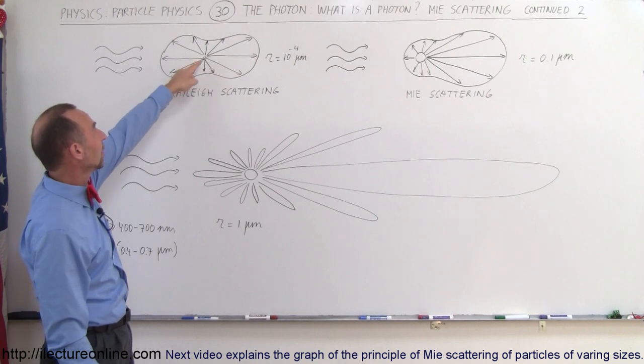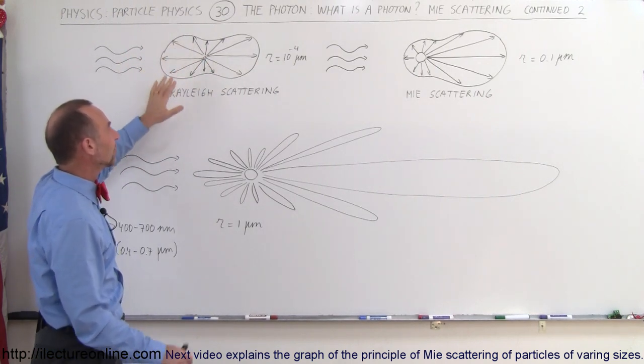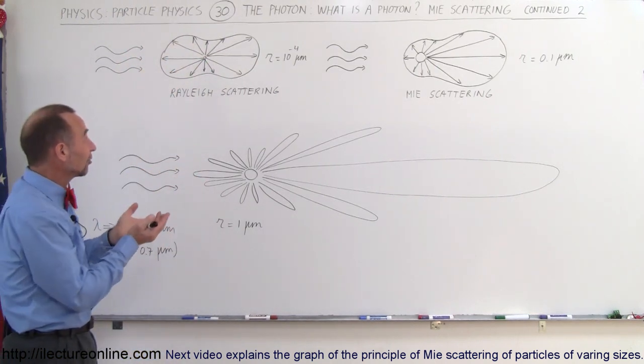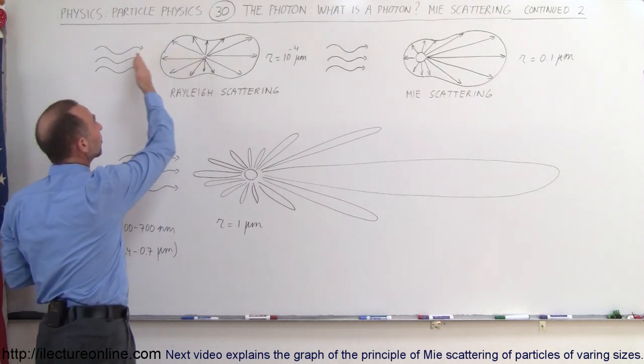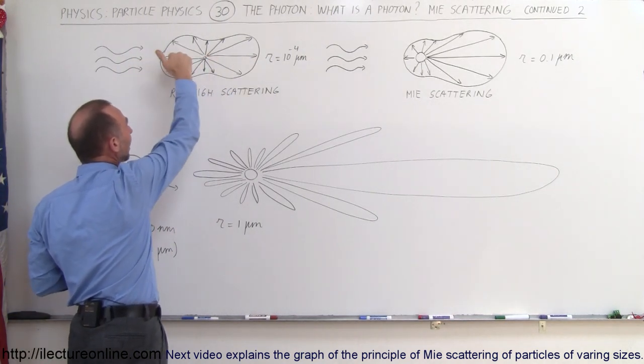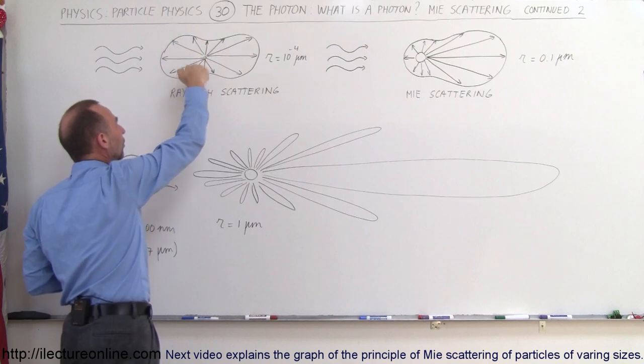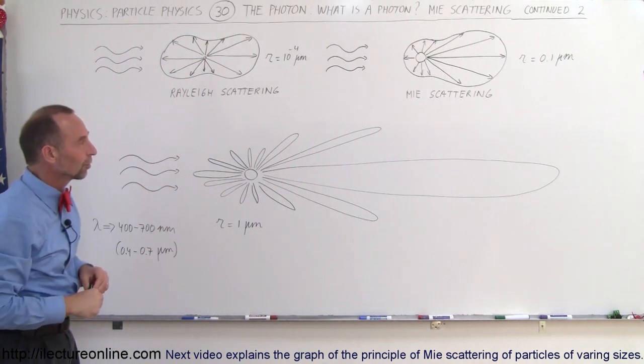Because of that, particles being very small in the atmosphere, we have what we call Rayleigh scattering. So the scattering looks like a peanut where we have the predominant scattering in the direction of the incoming light forward and backwards, and there's some relatively small amount of scattering towards the sides.